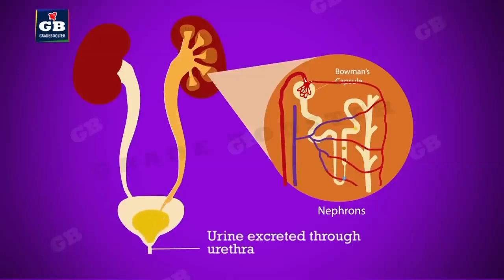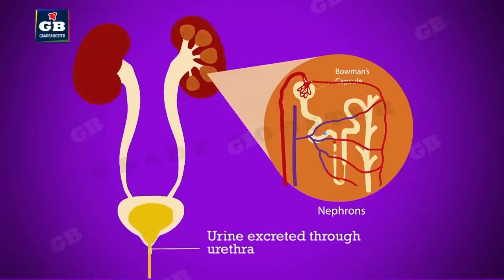Urine enters the urinary bladder through the ureters. Once the bladder is full, it triggers the sensation of urination. When we relax the muscles of the urinary bladder, the urine flows out through the urethra. These are the important points of life processes. Thanks for watching.